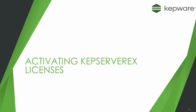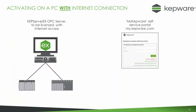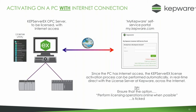Now let's look at the activation process itself. This is the activation process for a PC which is connected to the internet. With such a PC, the KepServer licensing utility can automatically license the software to the MyKepware portal with very little intervention by the user. You have to enter the username and password of the MyKepware account, but after that it's all done in the background automatically, very quickly and easily. One thing to note: you need to make sure that the option 'perform licensing operations online where possible' is ticked. This is the preferred option if the PC has an internet connection.